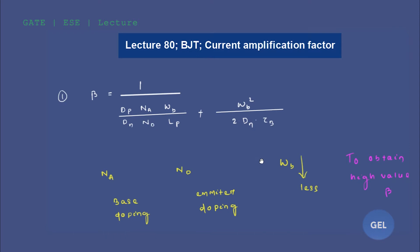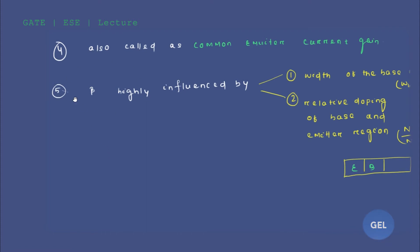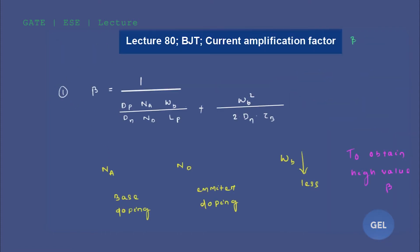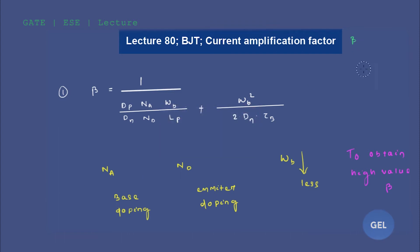Hi, welcome to Jera Gate ESC lecture. We are in lecture number 80 of EDC. This is the fifth module, that is BJT. This is a new chapter which is nothing but the current amplification factor, that is beta. In this video lecture I am going to discuss five important points regarding beta, which will be useful for your GATE and engineering service exams.